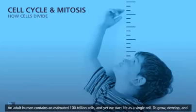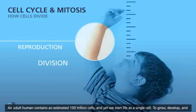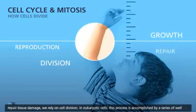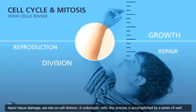An adult human contains an estimated 100 trillion cells, and yet we start life as a single cell. To grow, develop, and repair tissue damage, we rely on cell division.